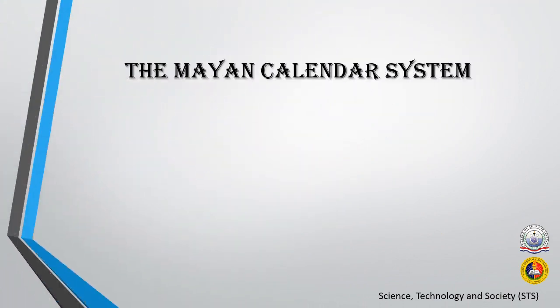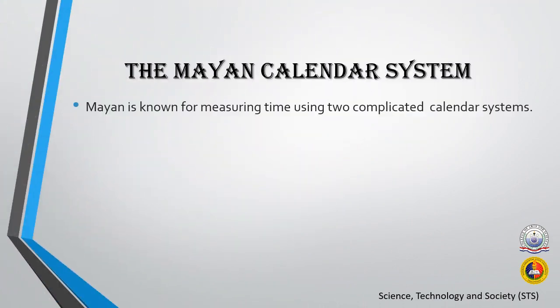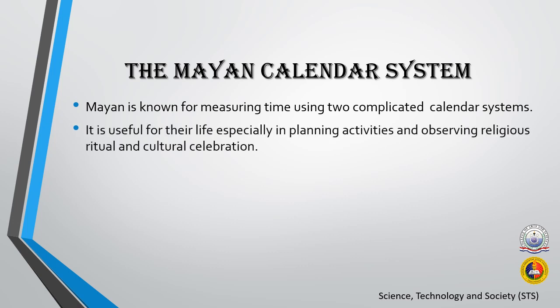The Mayan Calendar System: Mayans are known for measuring time using two complicated calendar systems. It was useful for their life, especially in planning activities and observing religious, ritual, and cultural celebrations.